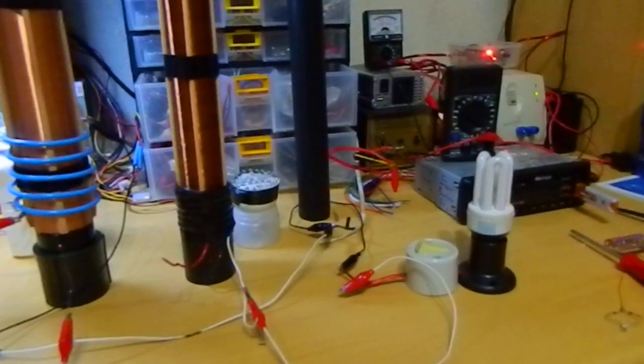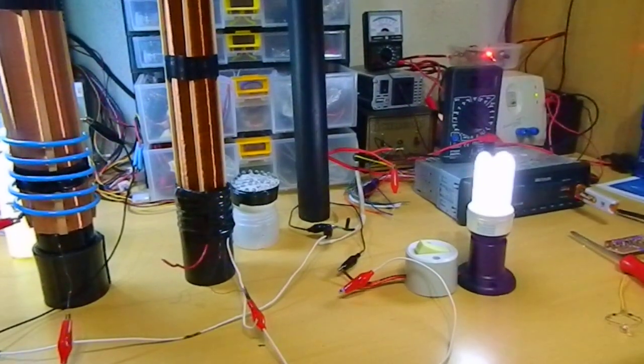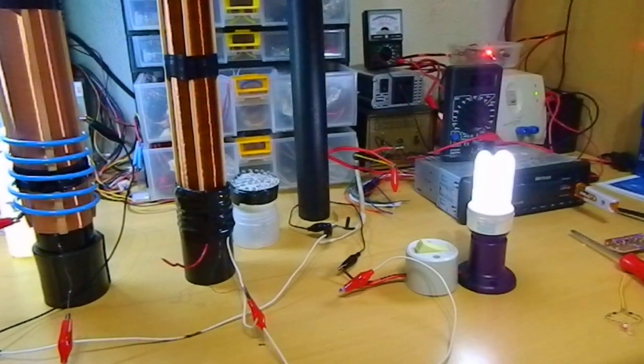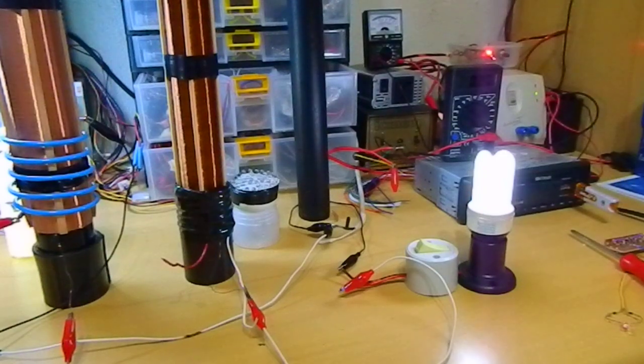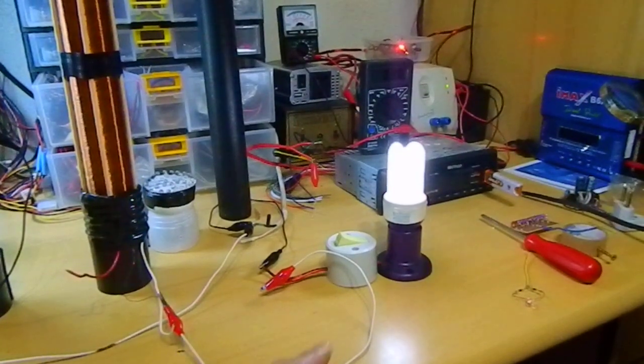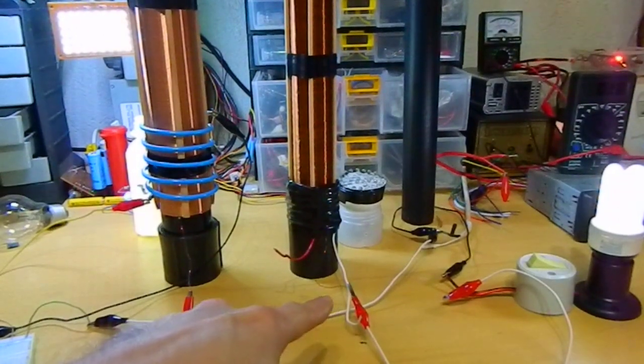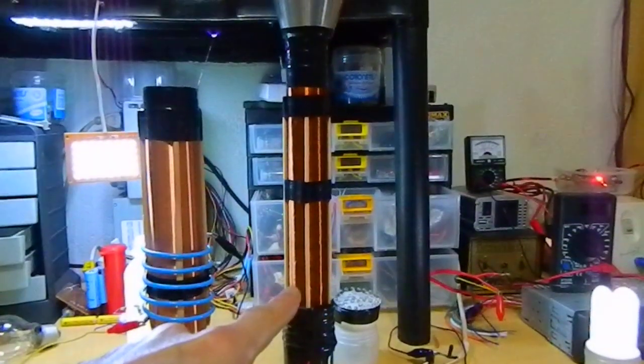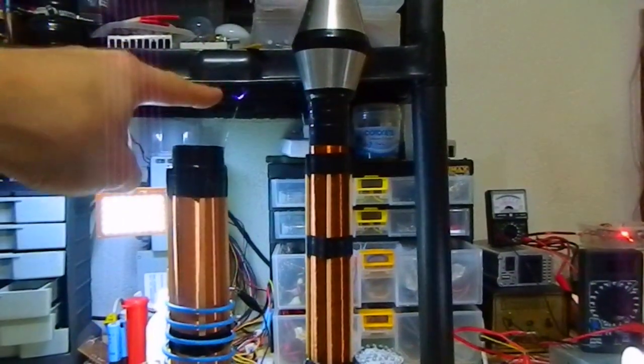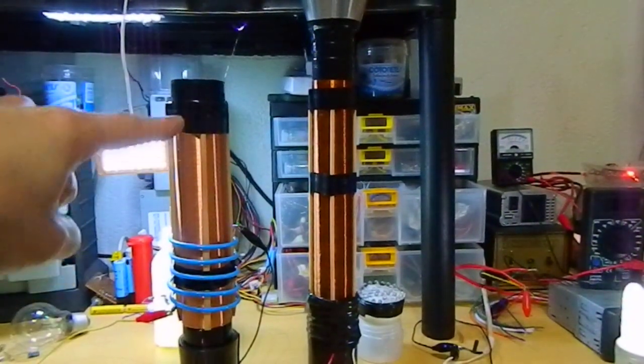And let me turn this on. Here, as you can see, I have a full brightness CFL. I'm in series with the earth ground connected to the bottom of the coil. I still have plasma on the L2. I mean, the L1.